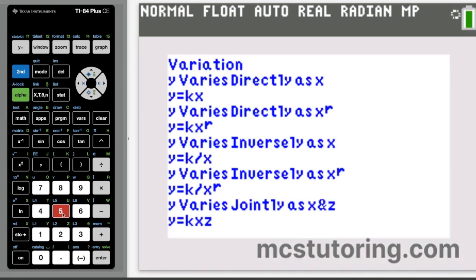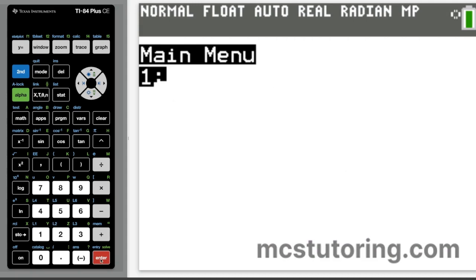So then we go on. We also have variation. Now, this is super handy because a lot of people get confused about direct inverse and joint variation. If y varies directly as x, y equals kx. If y varies directly as x raised to the r power, we have y equals k times x to the r. If y varies inversely as x, y equals k over x. If it varies inversely as x to the r, y equals k over x to the r. k is going to be a constant in all these cases. And then if y varies jointly as x and z, y equals kxz.